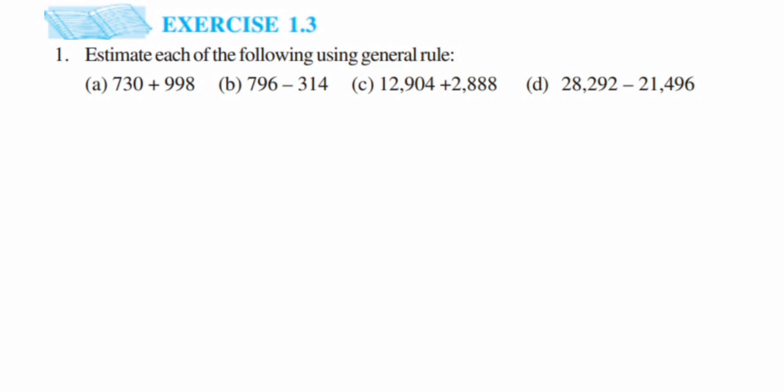They have not specified to which number we have to round off, like a hundred or a thousand, so we're going to understand from the numbers themselves what place we need to round off to. For example, the number 730 is in the hundreds, so we're going to round off this number to the hundreds place.